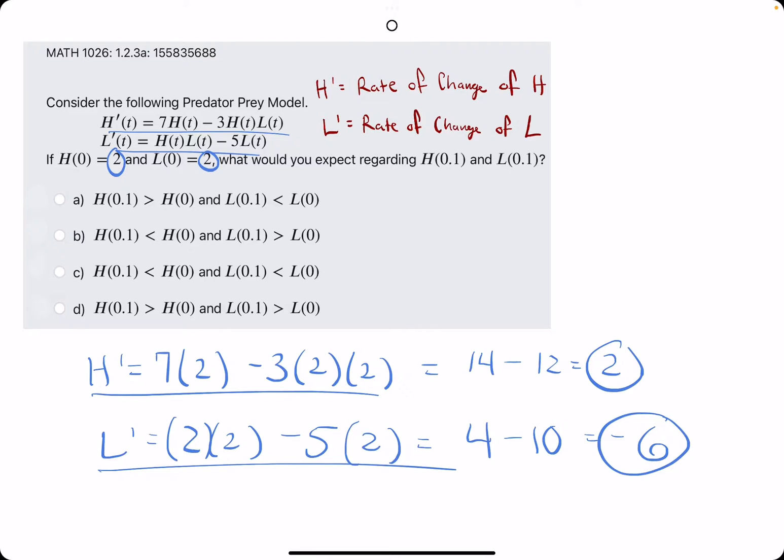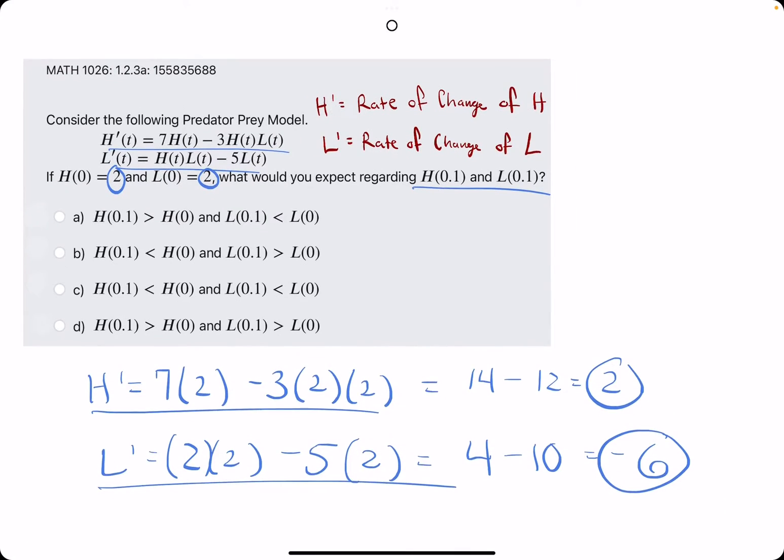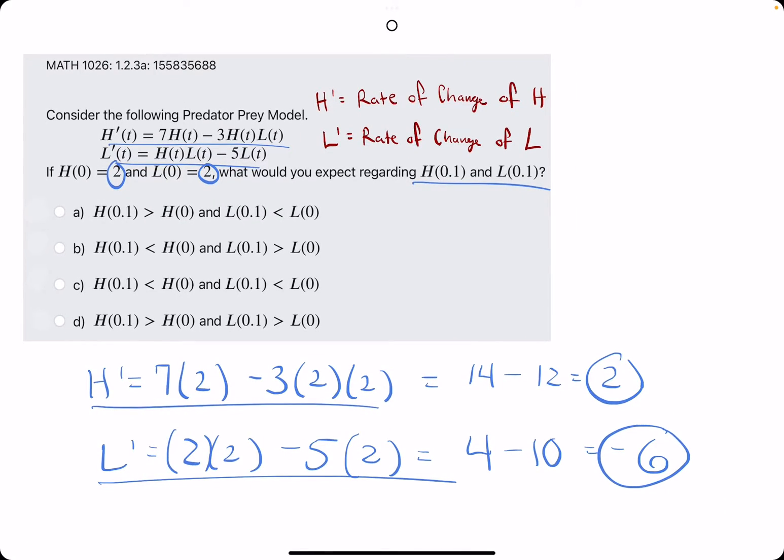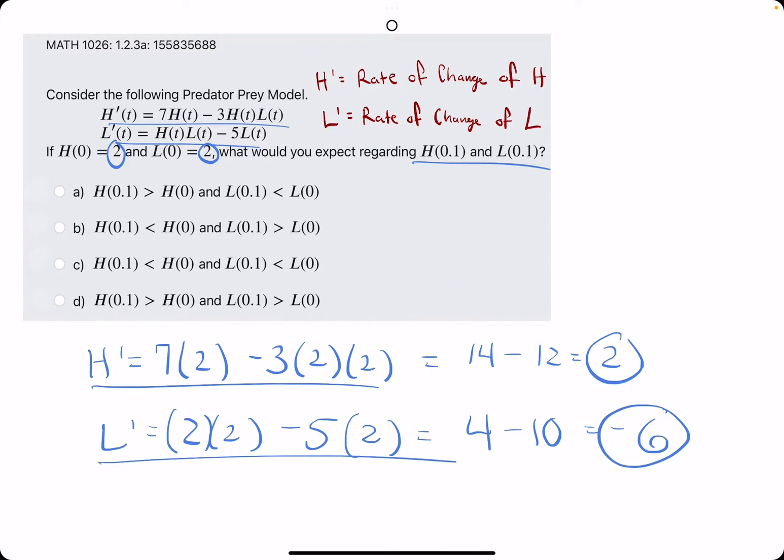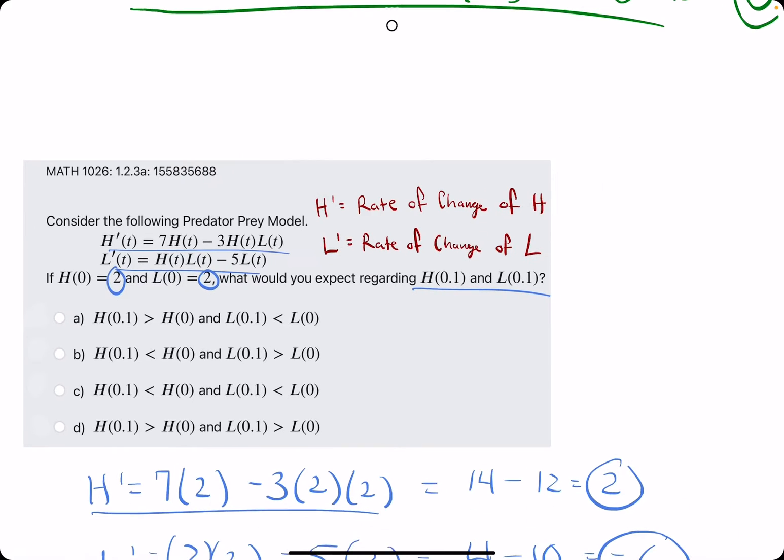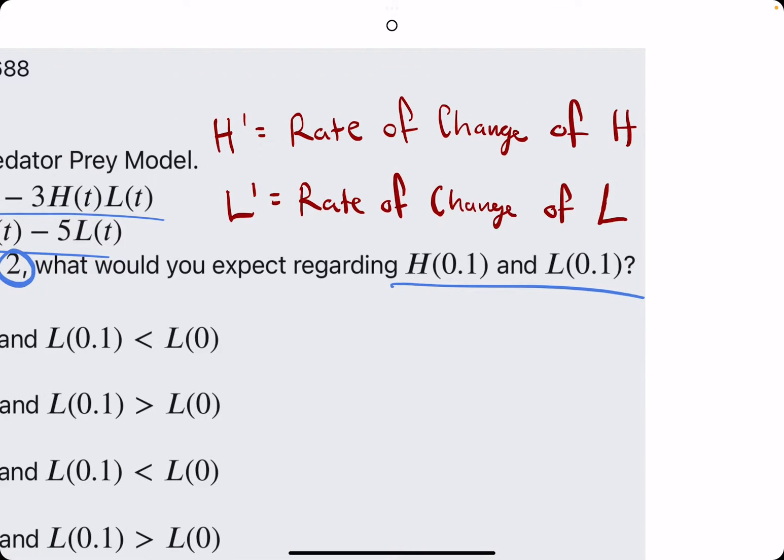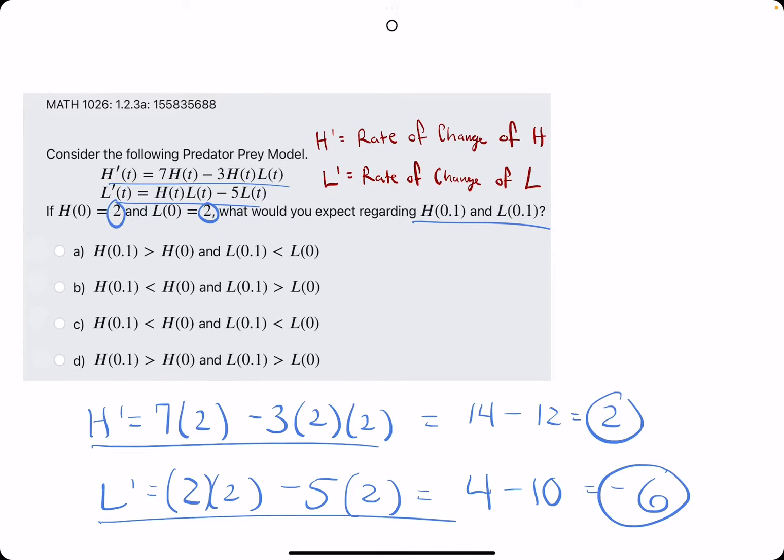Now, this is where the difference comes into play because they ask what would you expect regarding H(0.1) and L(0.1). Let's keep in mind that h prime represents the derivative or the rate of change of h, and l prime represents the rate of change of l.